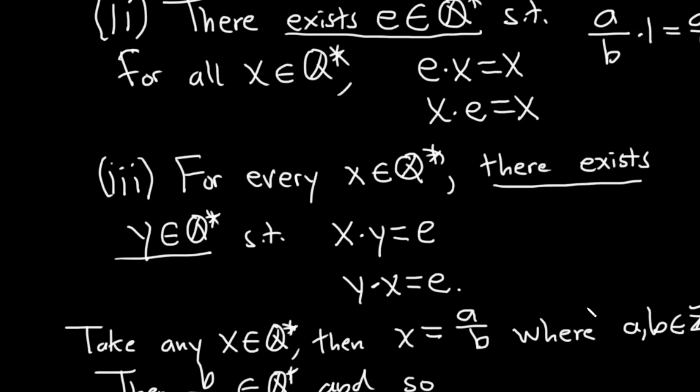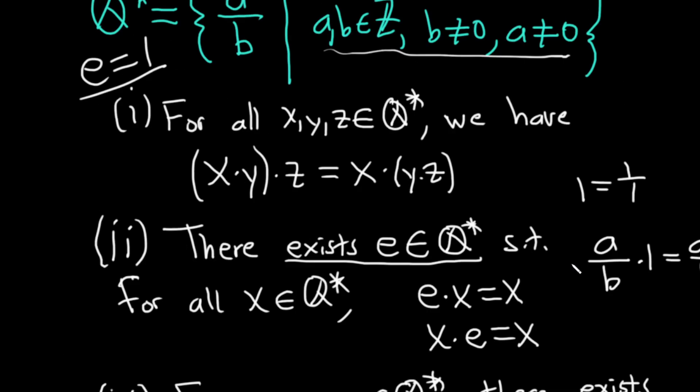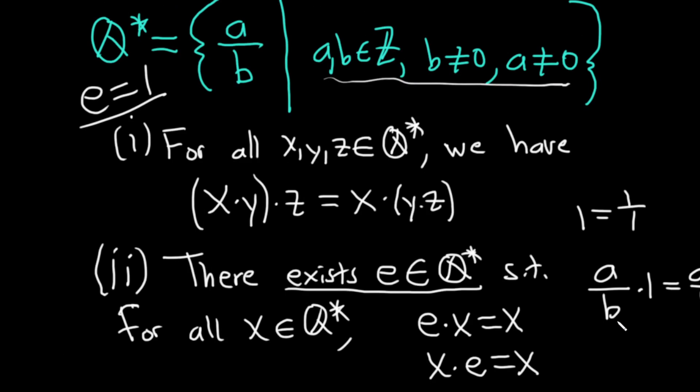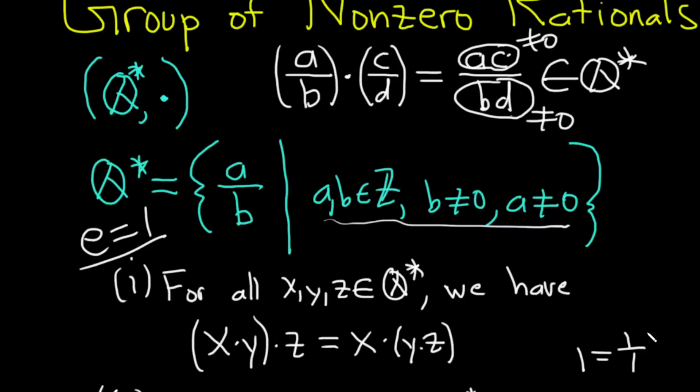So that's how you can do it. So it is a group. It's associative. It has an identity element. And every element has an inverse.